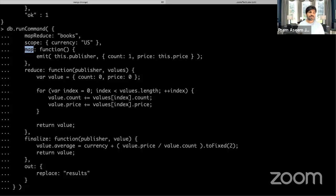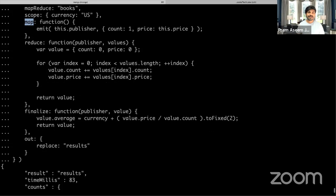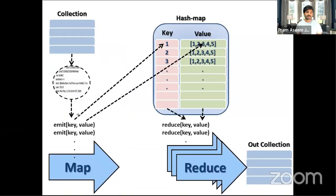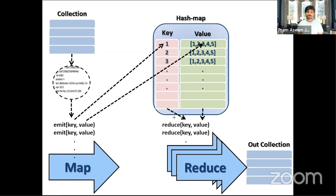To summarize: the map function emits key-value pairs from the data. 'Map' means creating a hash map — the key is one value and the value is typically some kind of array for aggregation. The reduce function then reduces those keys and values to a conclusion, which goes into the output collection. If you need further data processing, you can use the finalize stage.